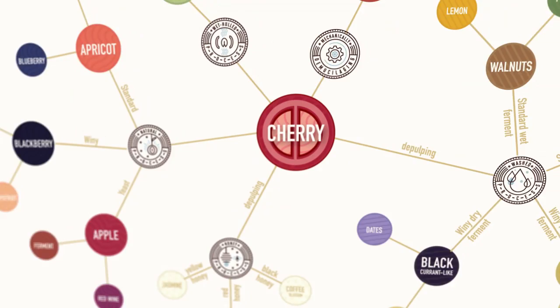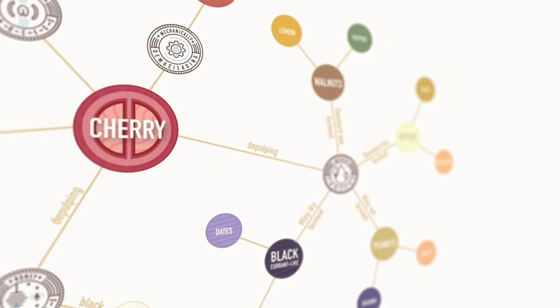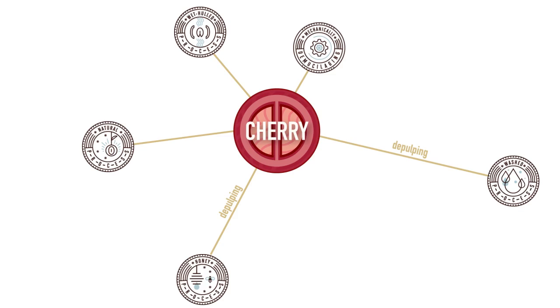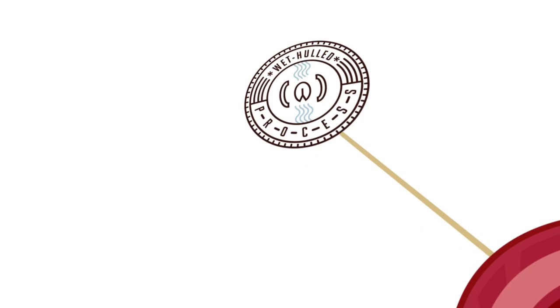We start out with the cherry. Outside of that cherry are five different processing methods which you can choose as a producer, and based on those processing choices, you get different flavors.